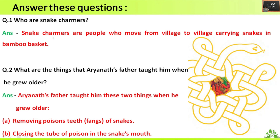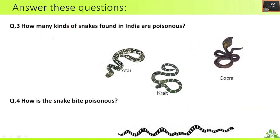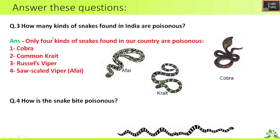Second question: what are the things that Aryanat's father taught him when he grew older? First one is removing the poison teeth of snakes — poison teeth are nothing but fangs. Second one is closing the tube of poison in the snake's mouth.